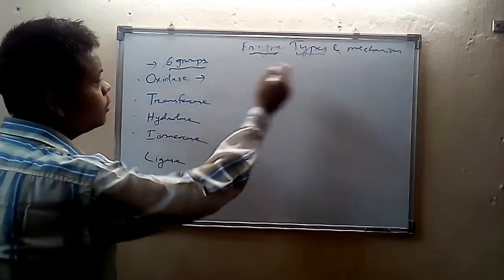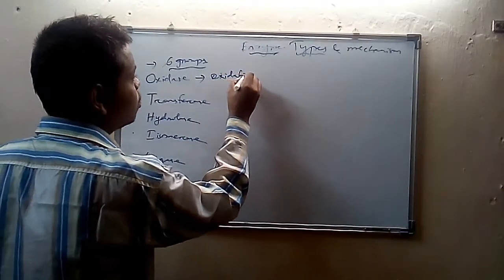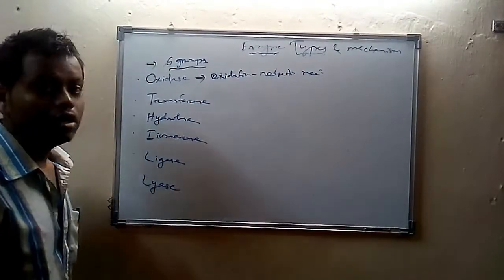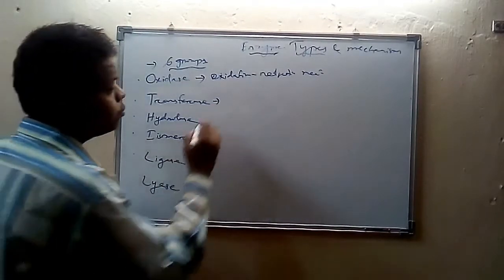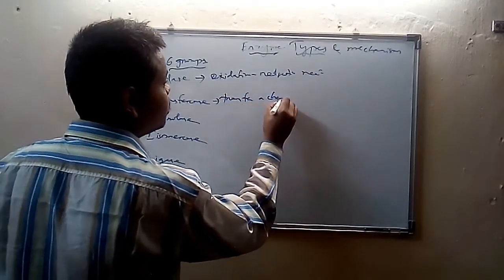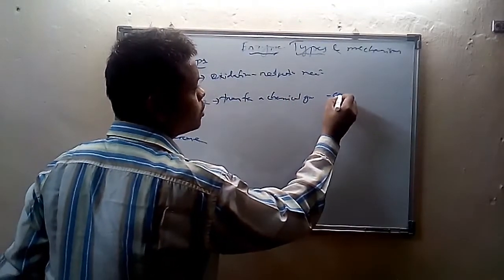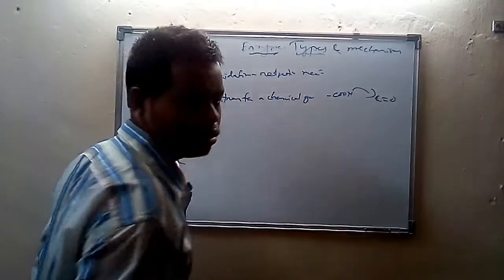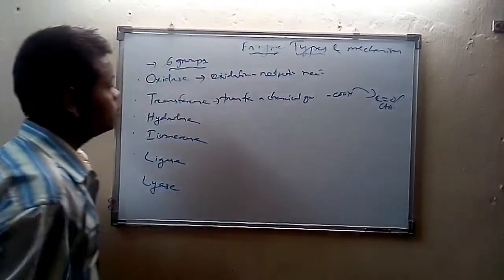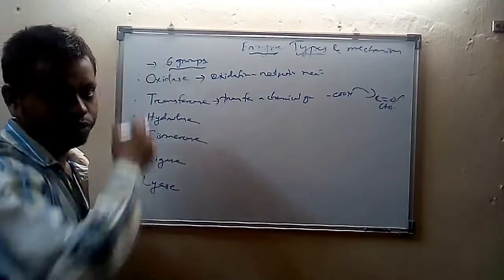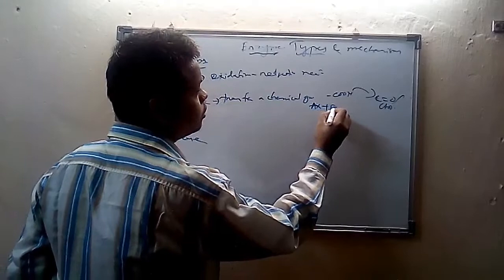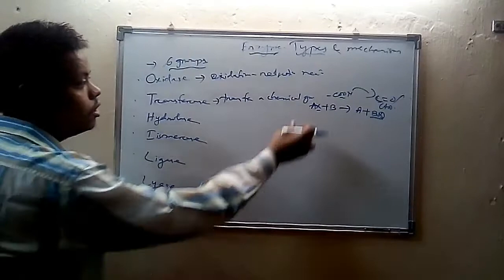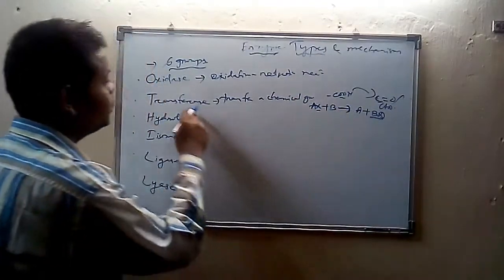The first group is oxidase. Oxidase-type enzymes facilitate oxidation-reduction reactions. Then transferase — transferase group of enzymes transfers a chemical group. For example, a group like COOH is transferred from one reactant to another, such as COOH converted into a ketone (C=O) or CHO. Suppose AX plus B becomes A plus BX — the chemical group X is transferred. Such reactions are mediated by transferase enzymes.